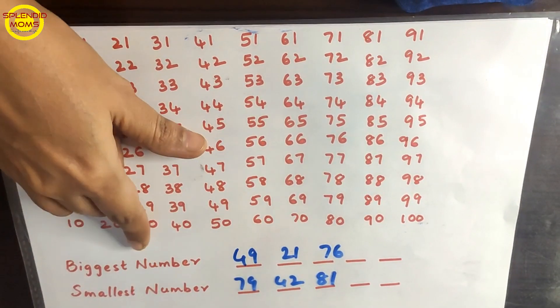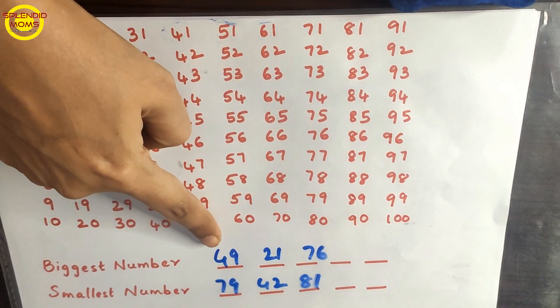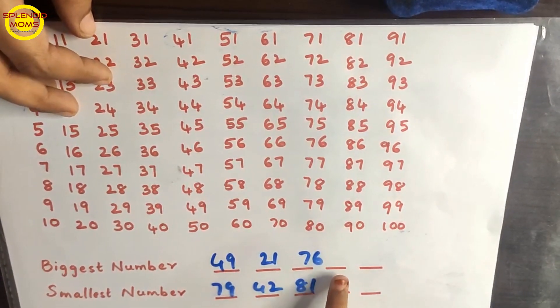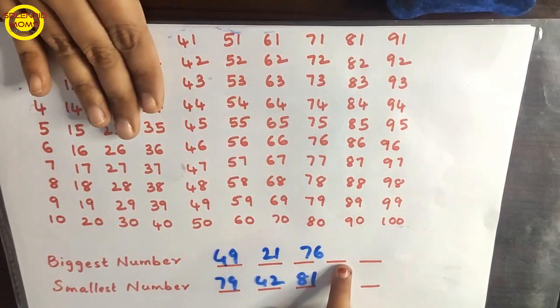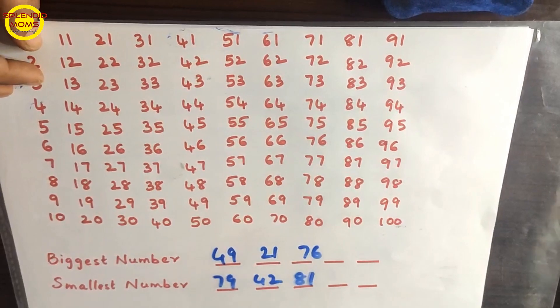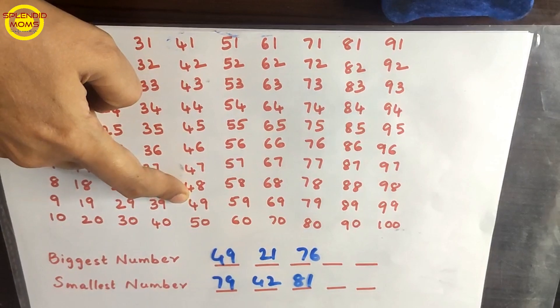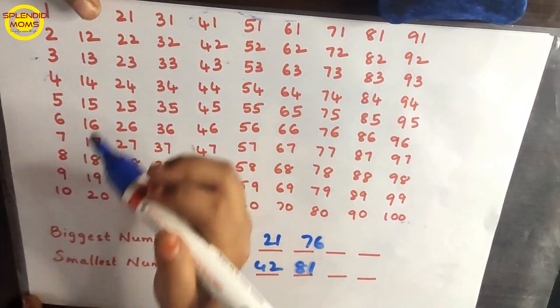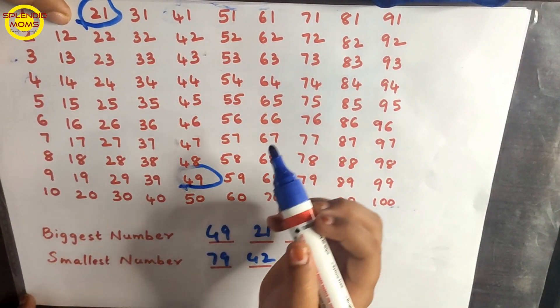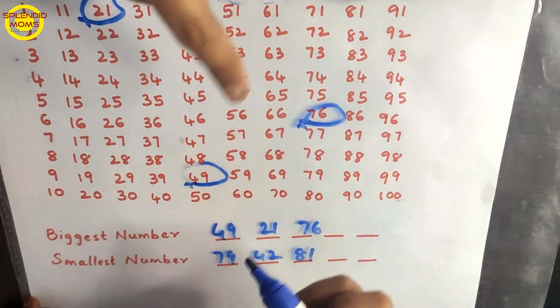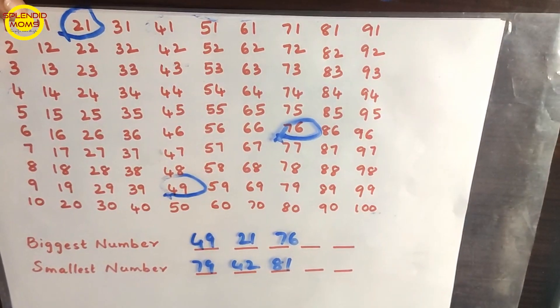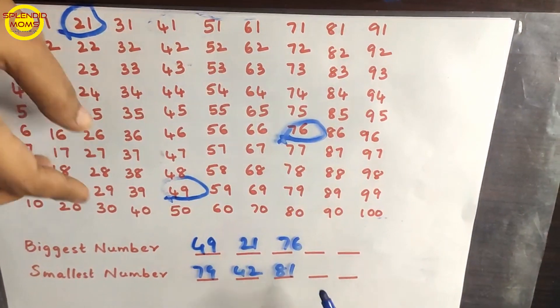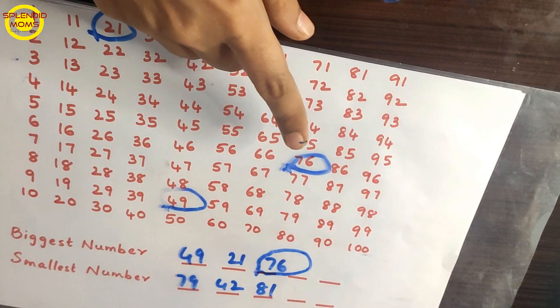Read these numbers. I want you to circle the biggest number. What is this number? 49. Next, 21. Next, 76. Now can you tell me with the help of the chart which one is the biggest number? Let's see on the chart. Circle 49 here. Now where is 21? Circle it here. Now 76. Now tell me which one is the biggest number with the help of the chart: 21, 49, or 76? Very good. 76. So 76 is the biggest number. This is how you identify numbers that will be your biggest number.